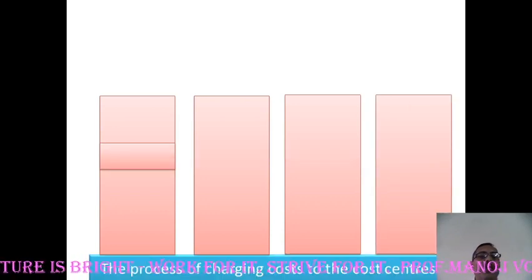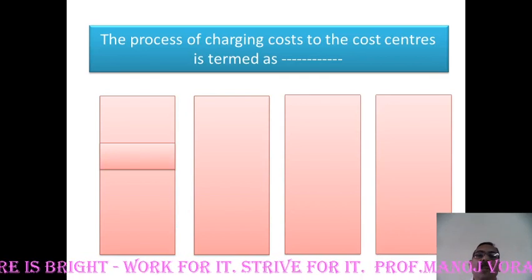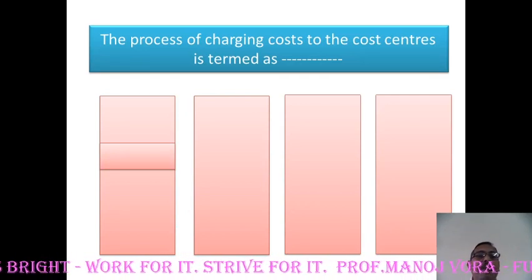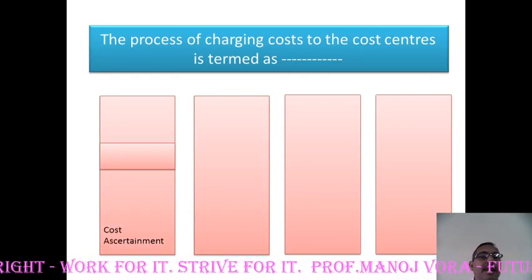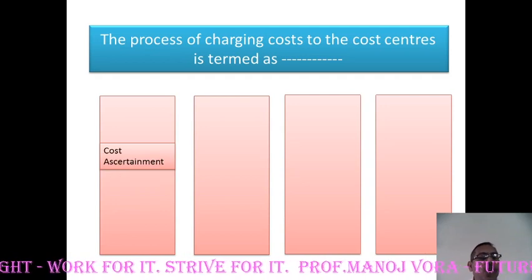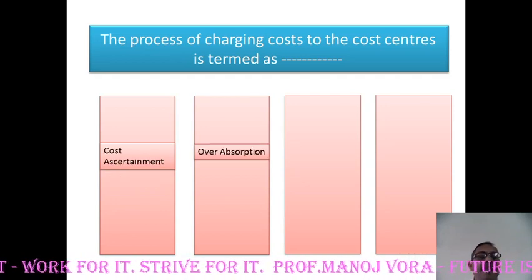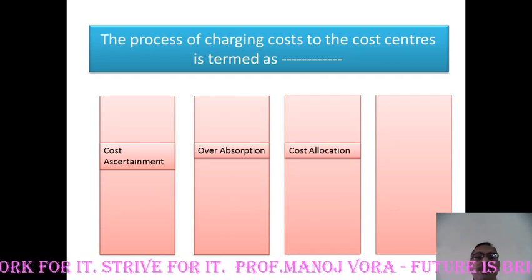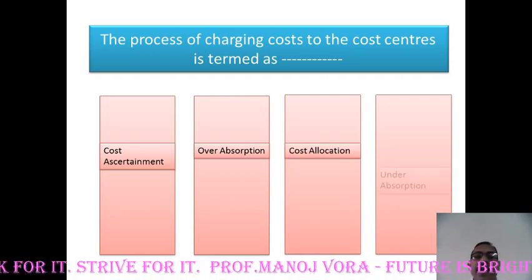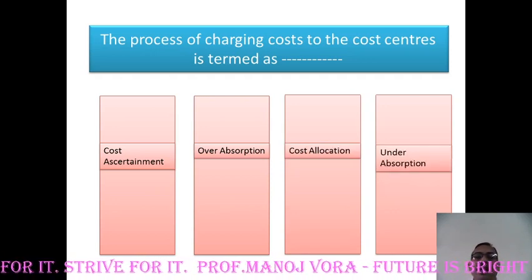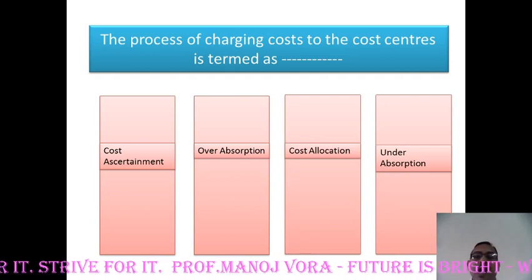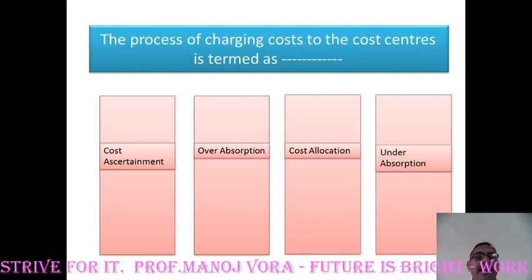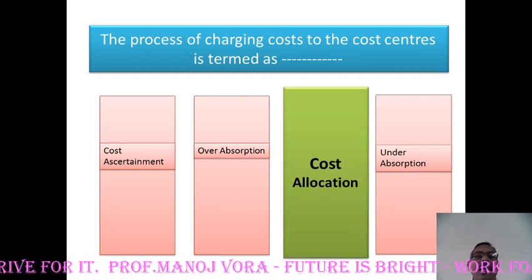Here is your next question. The process of charging cost to the cost center can be termed as — your first option cost ascertainment, second option over absorption, third option cost allocation, and fourth option under absorption. Here is your right answer: cost allocation.